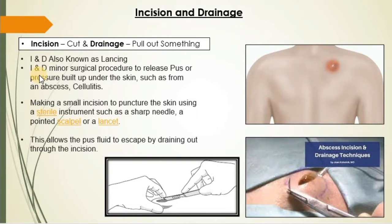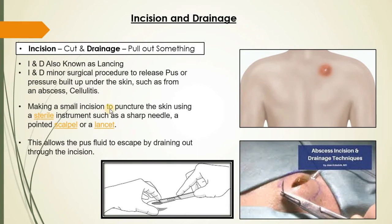Then I&D is a minor surgical procedure to release pus or pressure buildup under the skin such as from an abscess and cellulitis. Making a small incision to puncture the skin using sterile instruments such as sharp needle. With the help of scalpel and lancet they will puncture and they will remove the pus from that cellulitis and abscess parts. This allows the pus fluid to escape by draining out through the incision.